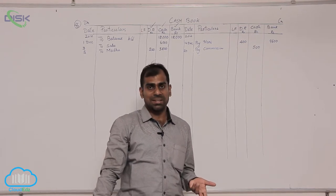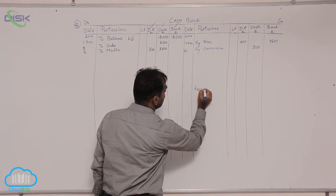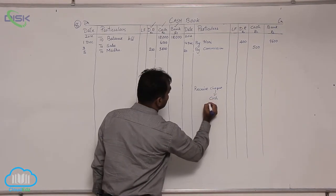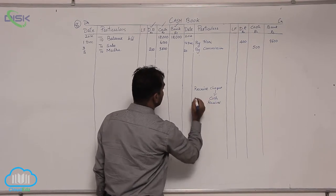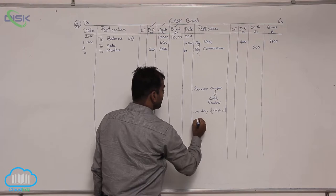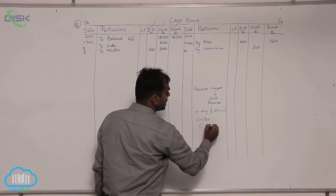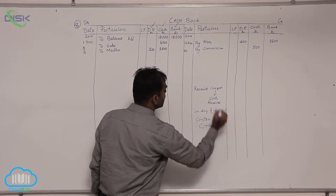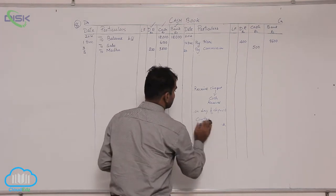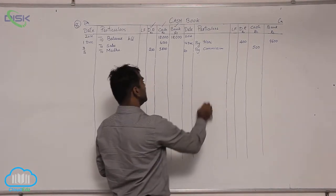Whenever you have the date of deposit, the treatment will be this way: on the day you receive the check, treat it as cash received. Then on the day you deposit, you have to treat it as a contra entry — that is, treat it as cash deposited into bank. Based on this explanation, let us record this transaction where you received the check on one date and deposited it on a different date.